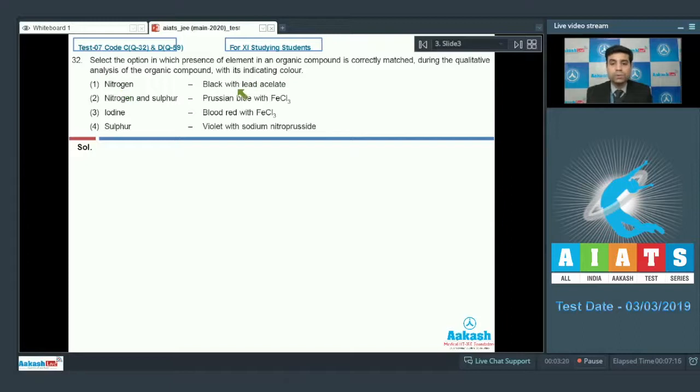First option is nitrogen, black with acetate. Second option is nitrogen and sulfur, prussian blue with FeCl3. Third is iodine, blood red with FeCl3. Fourth is sulfur, violet with sodium nitroprusside. So students, we know that if the compound contains sulfur, it gives us violet color with sodium nitroprusside. So the correct answer is option 4.